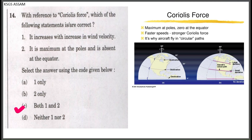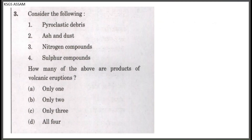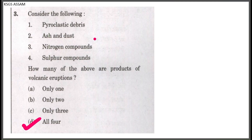Consider the following: pyroclastic debris, ash and dust, nitrogen compounds, sulfur compounds. How many of the above are products of volcanic eruption? All four — sulfur compounds, nitrogen compounds, ash and dust, and pyroclastic debris — are products of volcanic eruption.